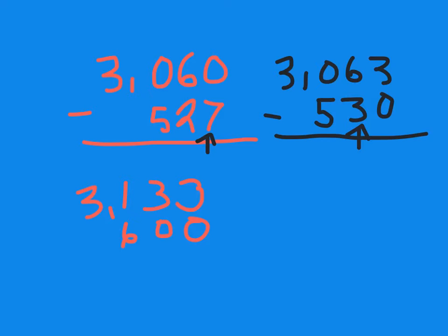3 minus 0 is 3, 3 minus 0 is 3. I'm going to borrow. I'll borrow the standard way. That changes to a 2. 11 minus 6 is 5. Bring down my 2, and my answer is 2,533. We will do one more example.